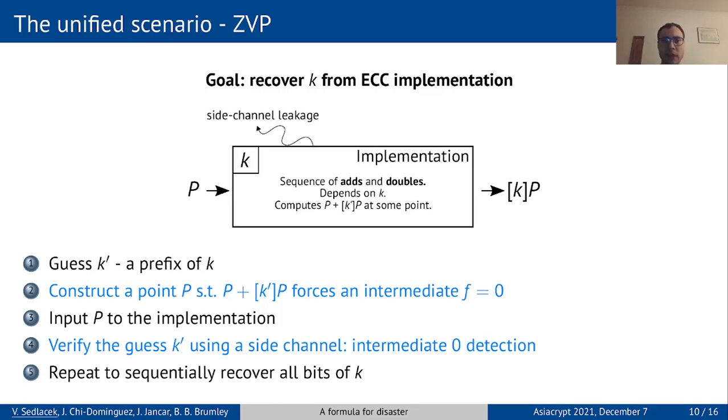Here in the second step, we are choosing a point which zeroes out an intermediate expression. And the side channel is based on our ability to notice computations with zero values, for example by shorter execution times.